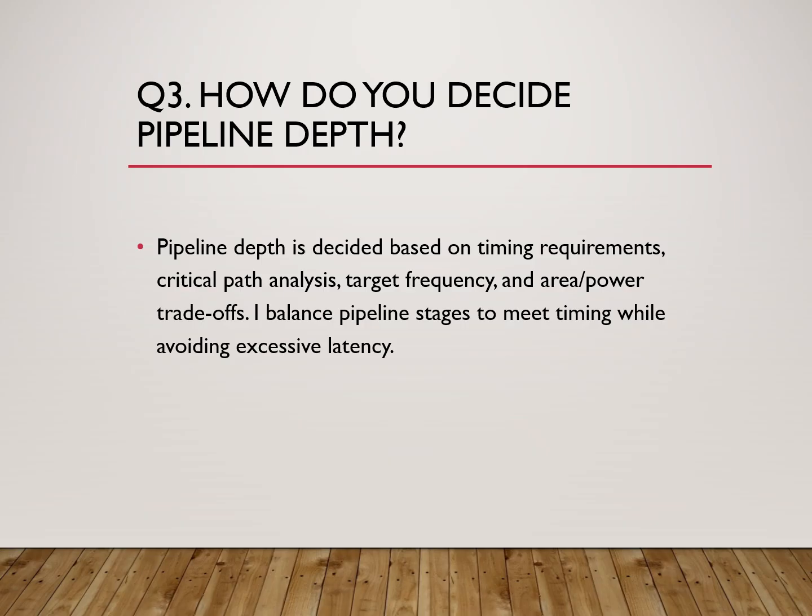Question number three: how do you decide pipeline depth? Pipeline depth depends on multiple factors. First, I analyze the critical path and target clock frequency. Then I consider area and power constraints, because deeper pipelines mean more registers and higher clock power. I also check if the design is latency-sensitive; if latency is critical, I try to keep the design shallow. Pipeline depth is always a trade-off between timing, power, area, and latency. At NVIDIA we aim for just enough pipelining to meet performance goals.